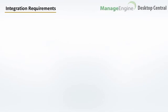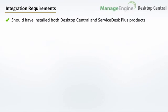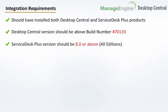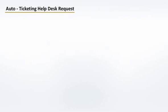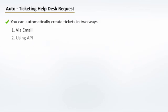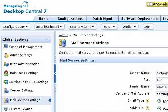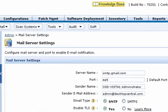To enable Auto Ticketing, you should be running both Service Desk Plus and Desktop Central in your network. The Desktop Central build number should be above 70,133. The Service Desk Plus version should be 8.0 or above. You can create tickets in Service Desk Plus in two ways: one is via email and the other is using the Remote API. To create tickets via email, you have to configure the mail server and help desk settings in Desktop Central.